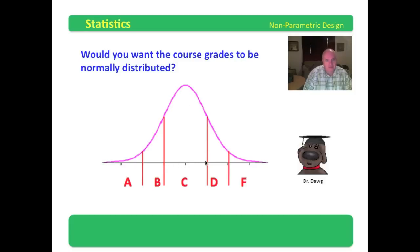Under the normal distribution, there's a certain percentage, 64%, 68%, who knows, that are normally distributed. From B to D, it's 96% normally distributed, only 2% A's and 2% F's. I don't know if I like that or not.